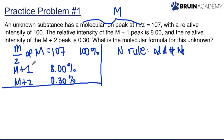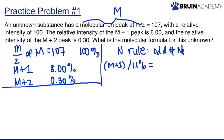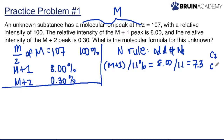M+1 gives us information about how many carbons are in the molecular formula. The formula is: M+1 divided by 1.1%, which gives us the approximate number of carbons. Taking 8% divided by 1.1 gives us a value of 7.3, meaning we probably have either a C7 or a C8 — either 7 or 8 carbons.